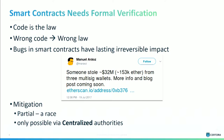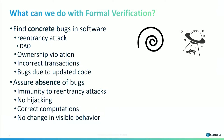Smart contracts are a domain that really needs formal verification. Because we think that code is the law, if we have a buggy code, we have a buggy law — and in some sense that makes the situation worse than before the blockchain. Also, since we are in a decentralized world, once you identify a bug it is very hard to mitigate. We can identify subtle bugs like reentrancy and hijacking bugs with formal verification, and also show their absence.